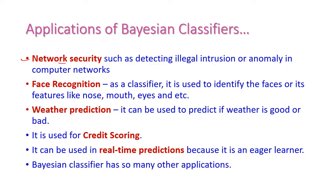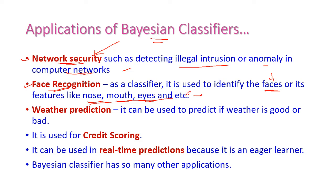The next application is network security. The Bayesian classifier will easily protect against illegal intrusions or anomalies in a computer network, providing security for the network. Next is the face recognition system, which is used to identify the face of a particular human and its features like nose, mouth, and eyes. By predicting these features, we can easily identify the face of a particular person.